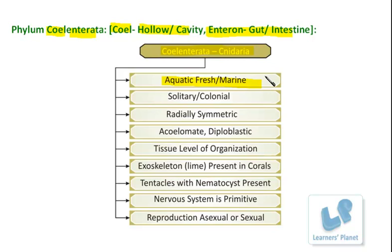This feature alone cannot be the base to classify organisms. As you know, Aristotle also classified organisms as aquatic or terrestrial and so on. But now we know that in the same habitat, different types of organisms are also present, so there were limitations in that classification system. That is why nowadays the five kingdom system is studied at a broad level, in which animals are found to have different phyla, and Coelenterata is one of them.